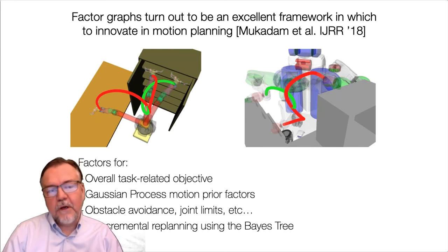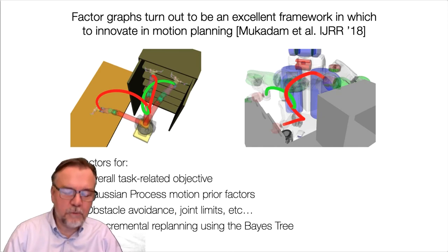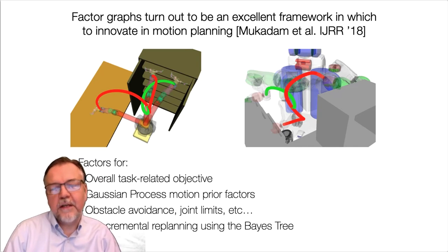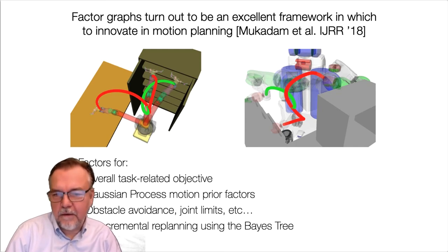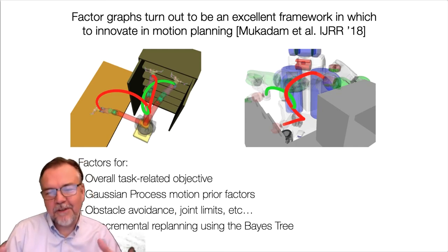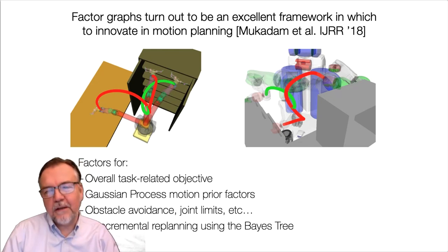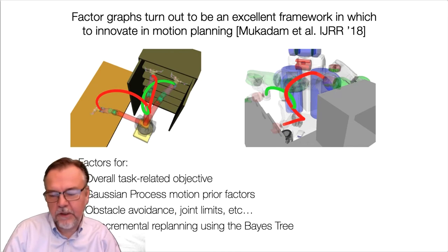What is novel in the last couple of years is that factor graphs also turn out to be beneficial for optimal control and motion planning. When tracking people with a drone, you can think about the motion planning problem in a factor graph context as well. In joint work with Byron Boots at Georgia Tech and our students, we looked at motion planning in a mobile manipulator context, and combining the Bayes tree with motion planning yields fast incremental re-planning — a very good match.